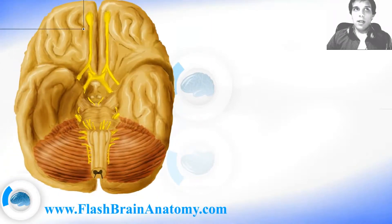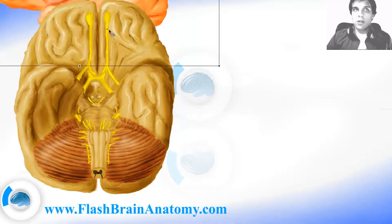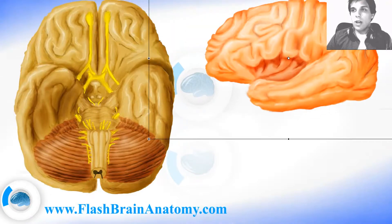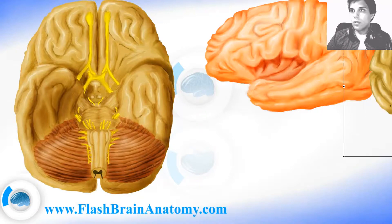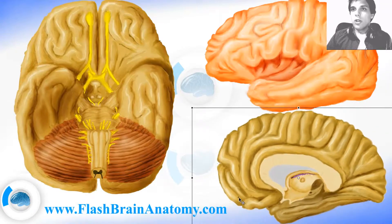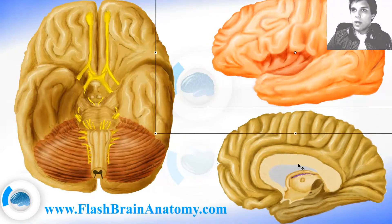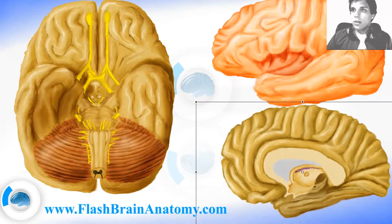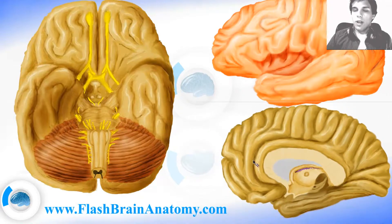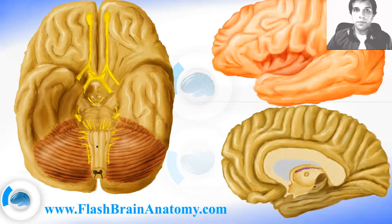I will illustrate the circle of Willis on the brain from a basal point of view — here's the brain. Then I will show how it looks on the lateral side, the arteries that go to the lateral side, and how it looks on the medial side. There are two important arteries we'll show branching on the medial side, and one artery from the lateral sulcus illustrated on the lateral side.